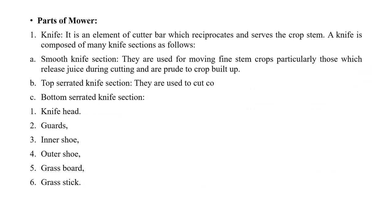Parts of the mower: First is the knife, which is an element of the cutter bar that reciprocates and severs the crop stem. The knife is composed of many knife sections: smooth knife section, used for mowing fine-stemmed crops — particularly those that release juice during cutting, which tends to cause build-up — top serrated knife section, bottom serrated knife section, knife head, guards, inner shoe, outer shoe, grass board, and grass stick.